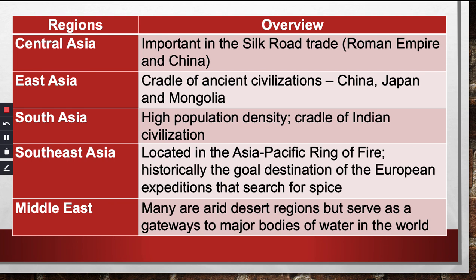Most of them were part of the former Soviet Union, which we discussed last time. East Asia is the cradle of ancient civilizations — China, Japan, Mongolia. Korea is also part of East Asia, and of course Mongolia, with its very rich history. South Asia includes India, Pakistan, Bangladesh, and Sri Lanka. It has high population density and is the cradle of Indian civilization. The culture and civilization of India is very rich.